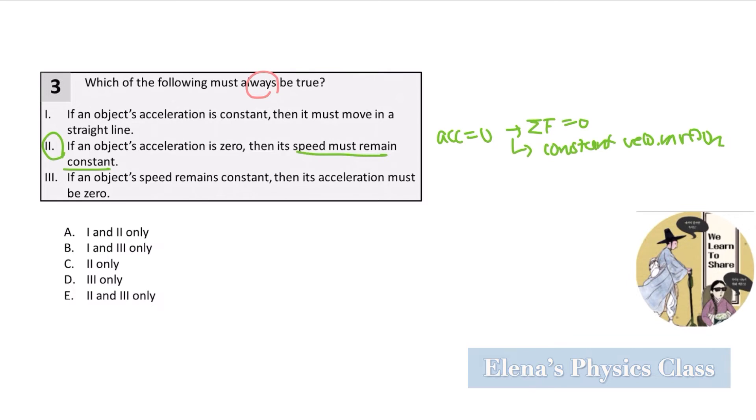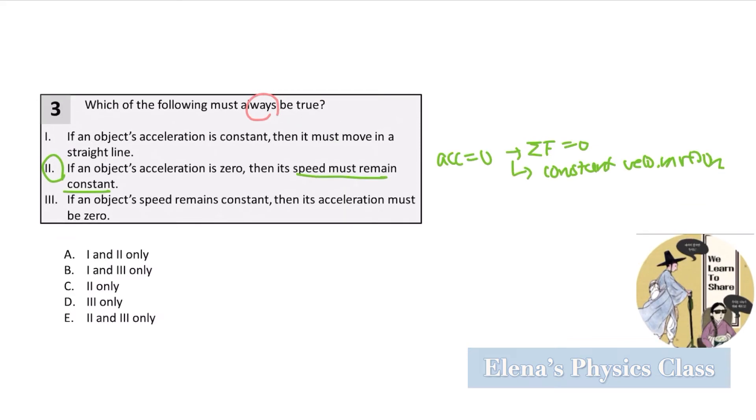But let's see why the other choices are wrong. So 1. If an object's acceleration is constant, then it must move in a straight line. This is wrong, right? Because we have seen something called a uniform circular motion.